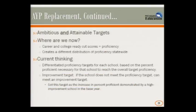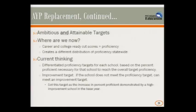On setting ambitious and attainable targets: career and college ready cut scores now equal proficiency, creating a different distribution than in the past. Current thinking is to set differentiated proficiency targets for each school based on the percent proficient necessary to reach some overall future target, and then set an improvement target as a safe harbor. If a school doesn't meet the proficiency target, they can meet it through the improvement target instead — that is the safe harbor approach.